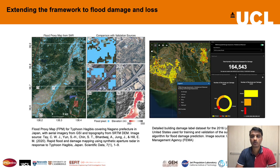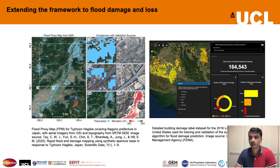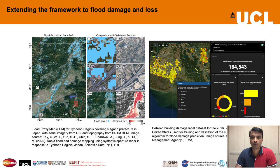Similar to the damage proxy map, the ARIA team also generates flood proxy maps (FPMs) for major flood events, also based on available SAR imagery, providing guidance on areas likely to be flooded due to heavy rains or tropical storms. This product is termed a proxy map because it is derived solely from Earth observation data and does not include validation based on ground truth. Although SAR imagery can identify the spatial extent of flooding, developing maps of flood depth often requires a post-processing phase where the flood footprint is intersected with topographic data in a digital terrain model, adding additional uncertainty to loss calculations.